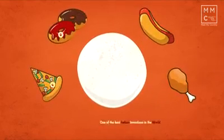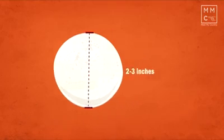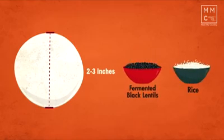Idli is one of the best Indian inventions in the world. It is two to three inches in diameter and consists of fermented black lentils and rice.